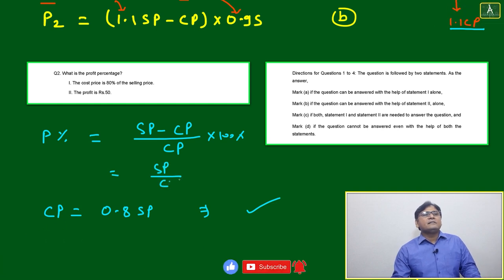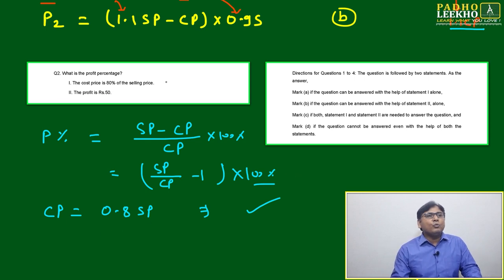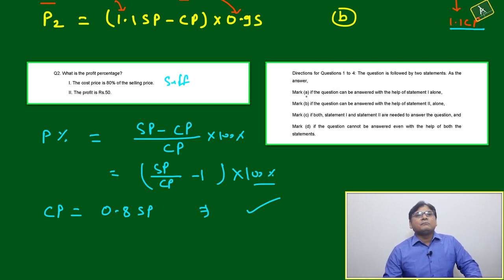Here you can write selling price by cost price minus one, which is called factor multiplication, into hundred percent. Then selling price by cost price, we have it is one by point eight. Easily we can calculate. Statement one is sufficient, so we can directly mark option A.